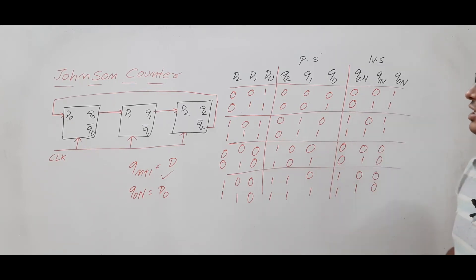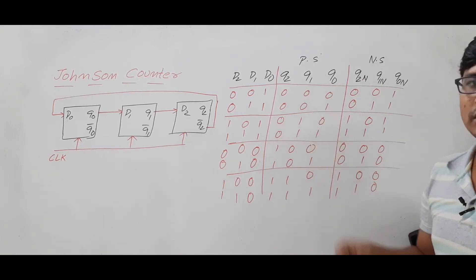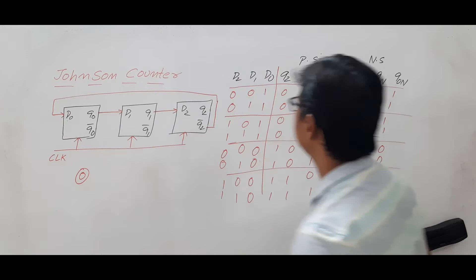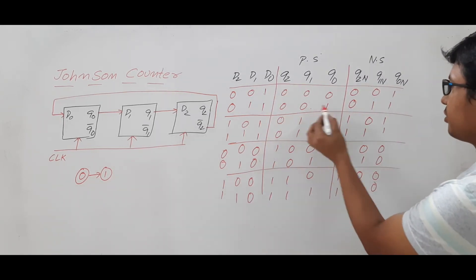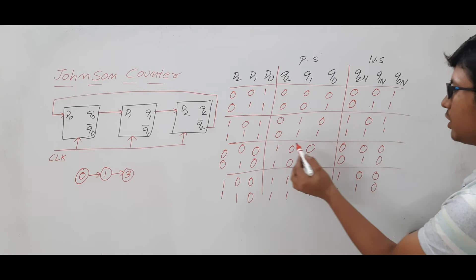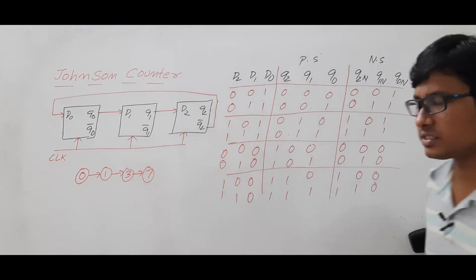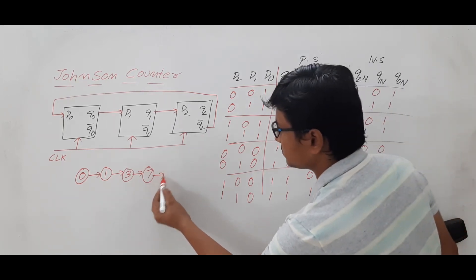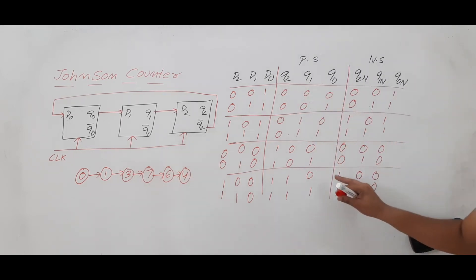Now we can trace what this counter does. Since it is a 3-bit counter, I convert states to decimal. From state 0 (000) the next state is 001, which is 1. From 1 the next state is 3. From 3 (011) the next state is 111, which is 7. From 7, the next state is 110, which is 6. From 6 the next state is 4 (100). From 4 the next state is 000, which is 0 again.